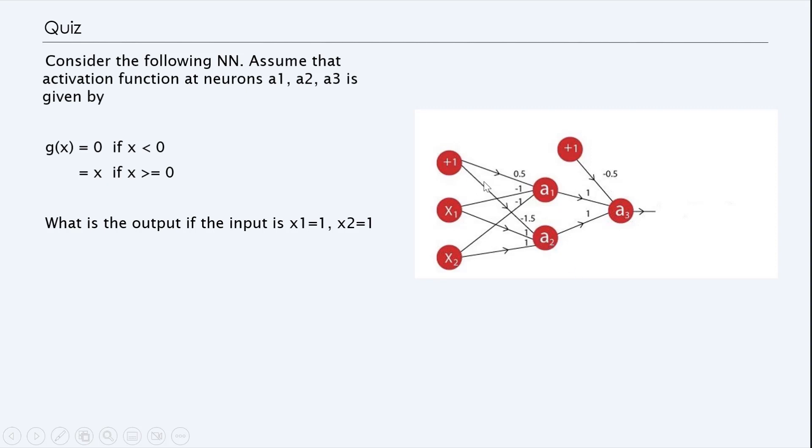Same, you can compute A2 by multiplying 1 times minus 1.5, x1 times 1, x2 times 1, and then apply the activation function, g of x. This function is called the ReLU function, which is quite useful and quite practical to use in neural network training. So once you get the neurons activated, A1 and A2, they have certain values. And the next thing you're going to do is to compute A3. So A3 is computed by 1 times minus 0.5, A1 times 1, and A2 times 1, and you get a sum. And then you apply the g function, and that gives you the output as a number.